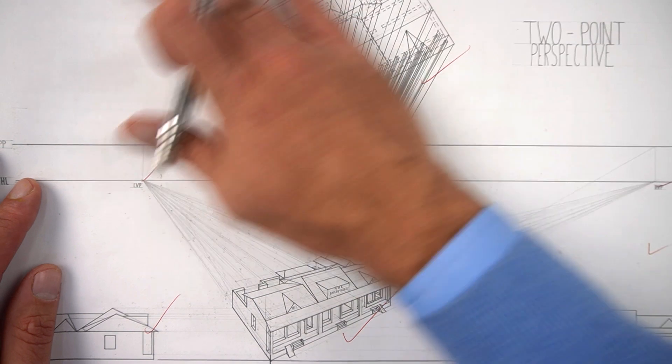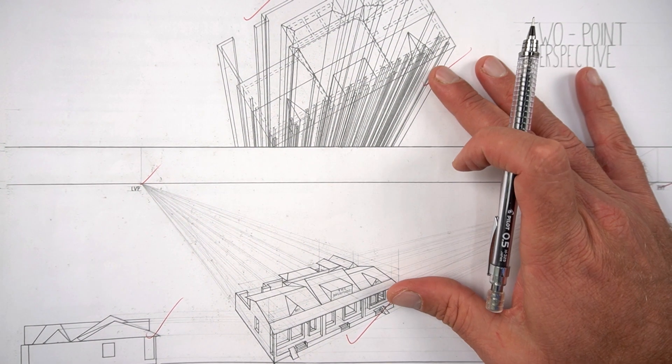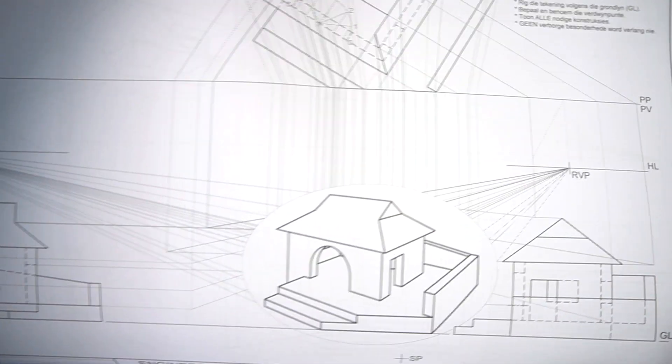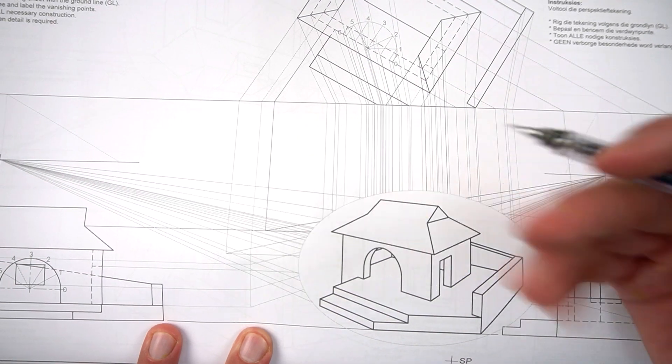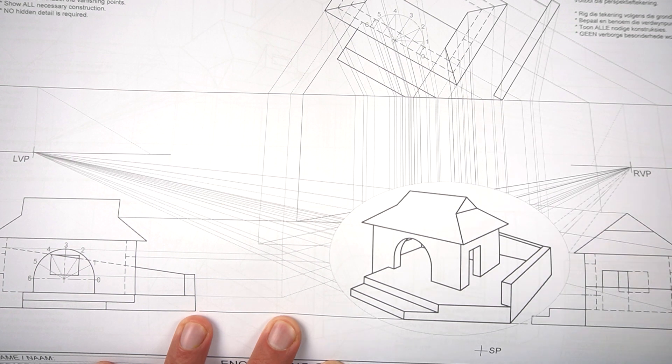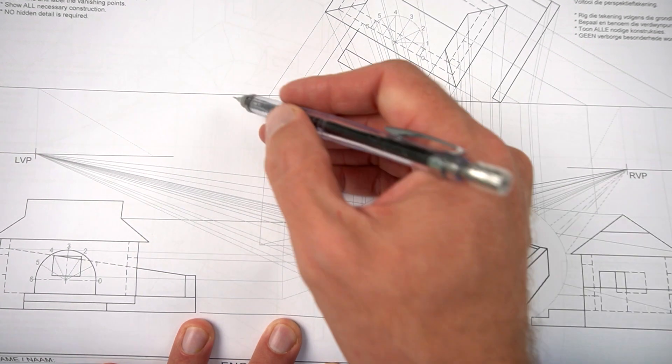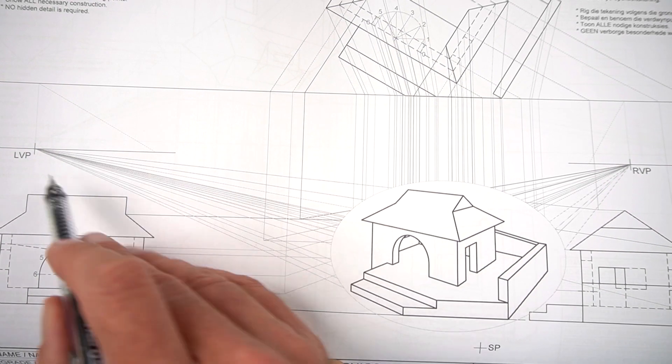But first of all, just pull it off by getting the basics right. And to do that, practice this on an A3, getting your spacing correct. Another hack that I'd like to give you is the following: in your JP EGD workbook on page 52, there's already two-point perspectives that were given to you.